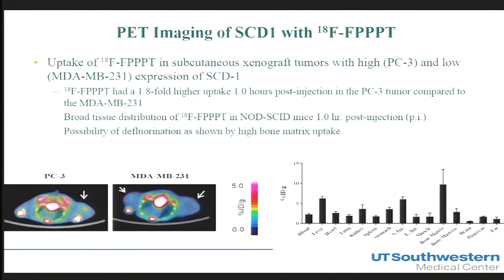Ex vivo biodistribution showed that the radiotracer distributes broadly, with most activity excreted in urine. Notably, a significant amount of activity was taken up into the bone matrix, possibly due to defluorination — which is not desirable. However, this effect was not too drastic, as we were still observing increased retention in the SCD-1-positive cell line.